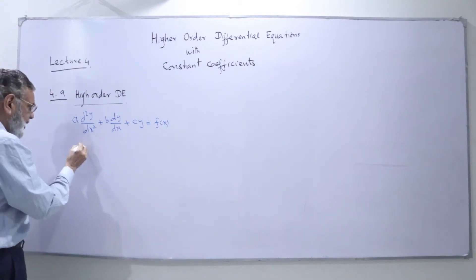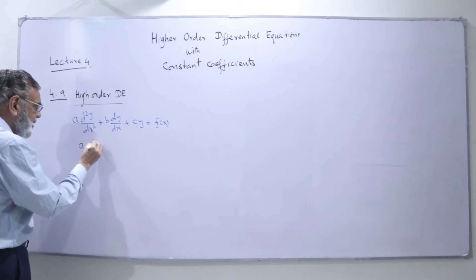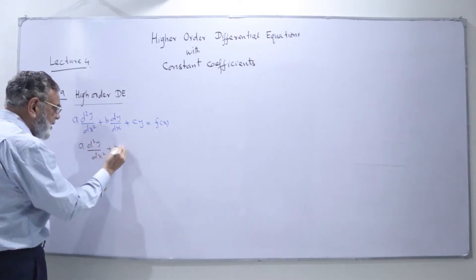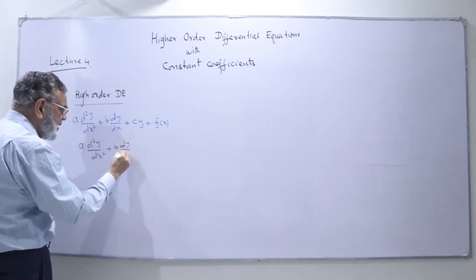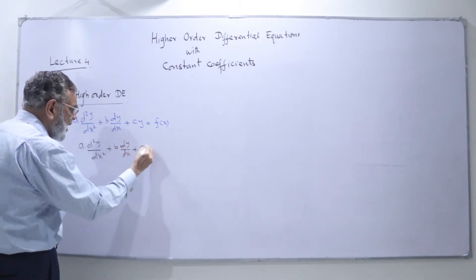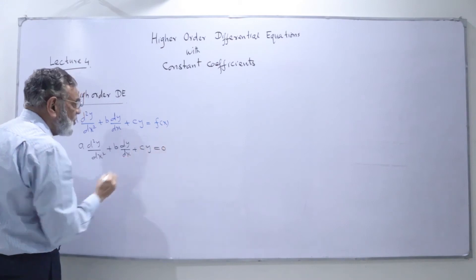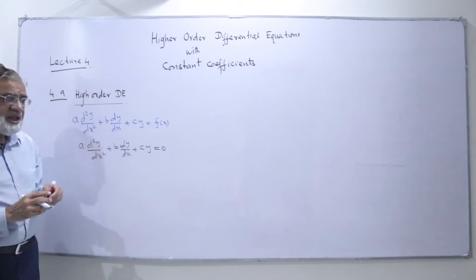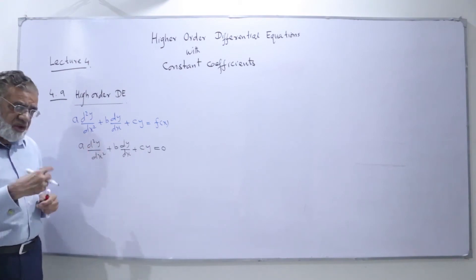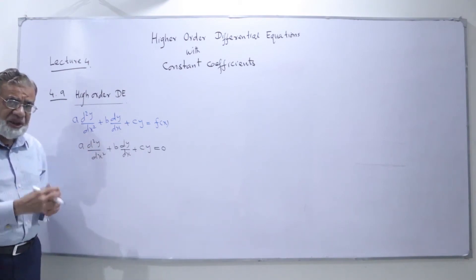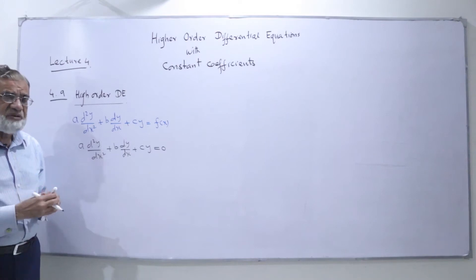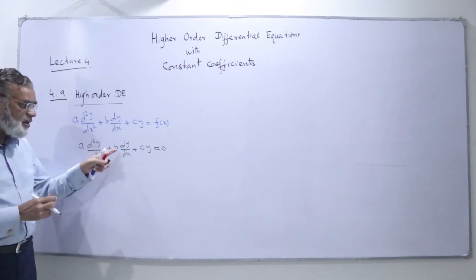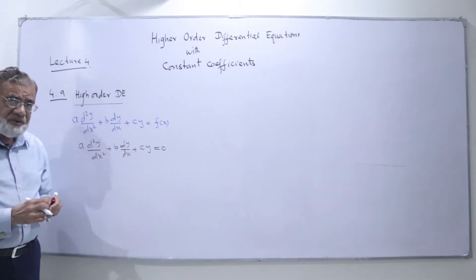Now if I write the same equation as a·d²y/dx² + b·dy/dx + cy = 0, this equation is a homogeneous differential equation because all terms contain y, and y = 0 is the trivial solution, which is always present in the homogeneous equation. The highest order is second, so it is second order with constant coefficients.